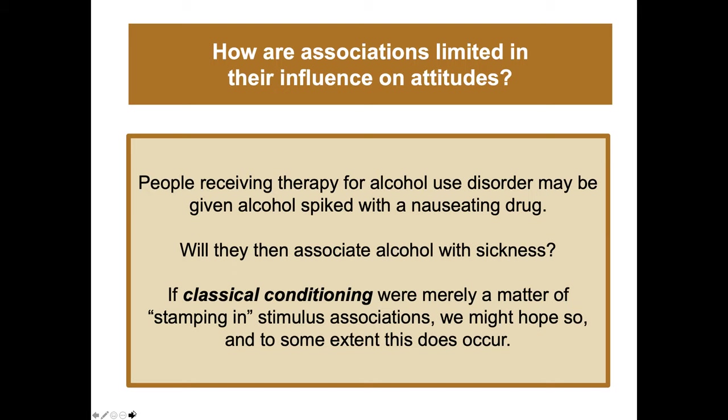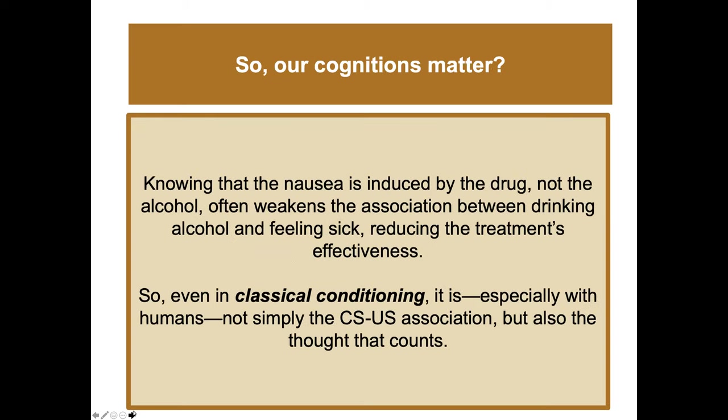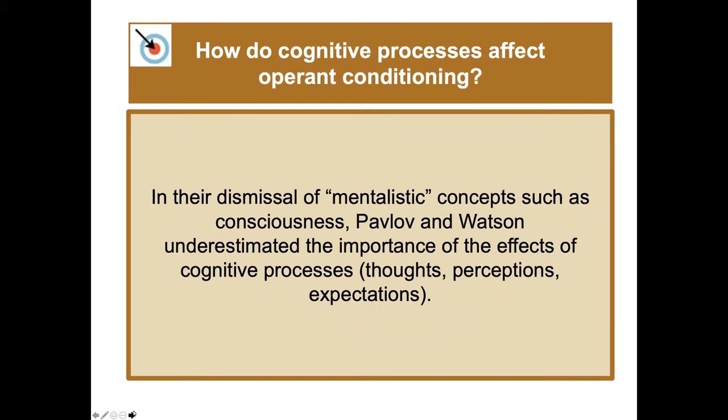People receiving therapy for alcohol use disorder may be given alcohol spiked with a nauseating drug. If classical conditioning were simply about stamping in stimulus associations, we might hope they'd associate alcohol with sickness. But knowing cognitively that the nausea is induced by the drug — not the alcohol — often weakens that association, reducing the treatment's effectiveness. This shows that especially for humans, it's not simply the conditioned stimulus-unconditioned stimulus association, but also one's cognitions that matter.